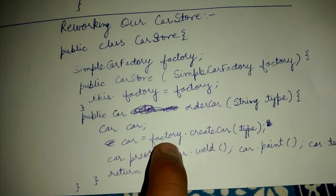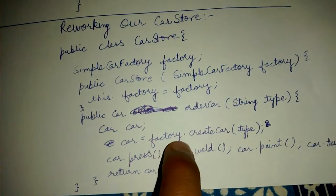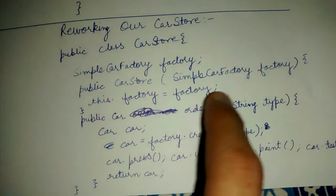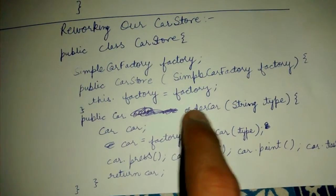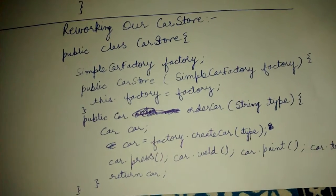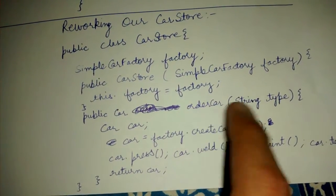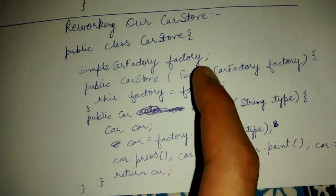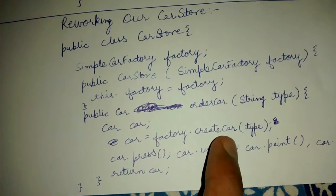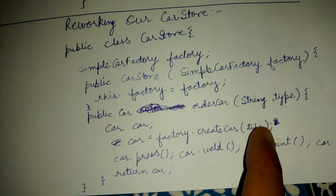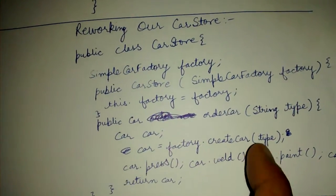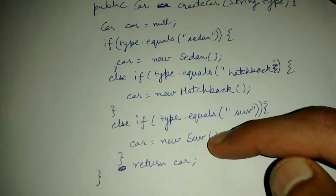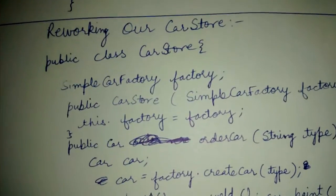Basically, there is an orderCar method in which we have a car reference. We first call, we first ask our factory to create a car of the given type for us. The type has been passed by whoever calls this orderCar method. The client will specify this type, so the client will say carStore.orderCar brackets sedan. Whatever type we get from the client, we as-is pass it to the factory, and factory will, based on this type, decide and create the new car and return it to you.